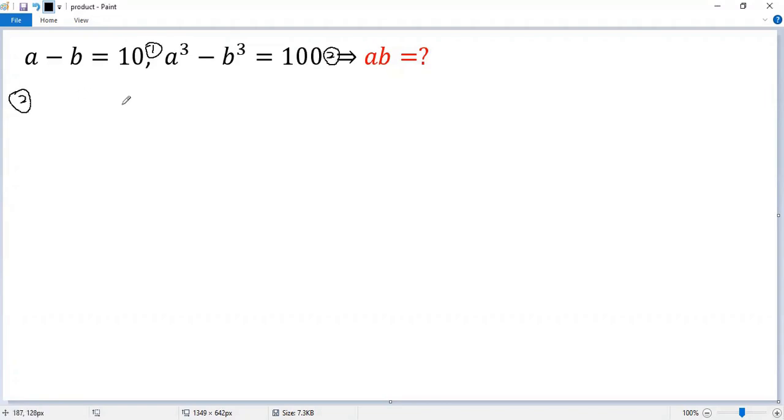From 2, using the difference of cubes formula, the left side can be written as a minus b times a squared plus ab plus b squared equals 100.